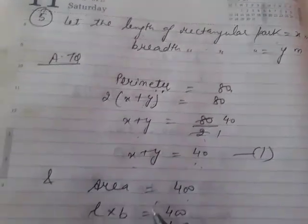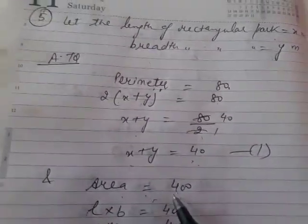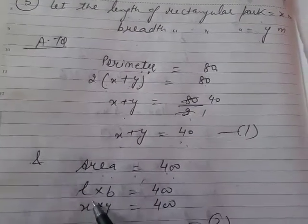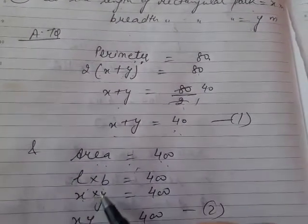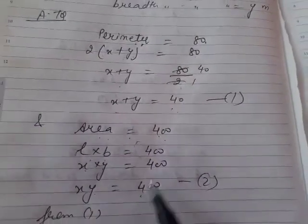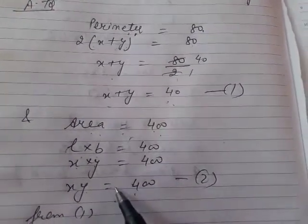Second situation, we have given that area is 400 square meters. Area formula for rectangle is length into breadth. Length is x and breadth is y, so x into y is equal to 400. The second situation is this.